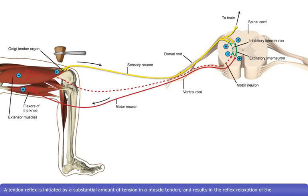A tendon reflex is initiated by a substantial amount of tension in a muscle tendon and results in the reflex relaxation of the skeletal muscle attached to that tendon. It is less sensitive than the stretch reflex but produces an opposite effect.